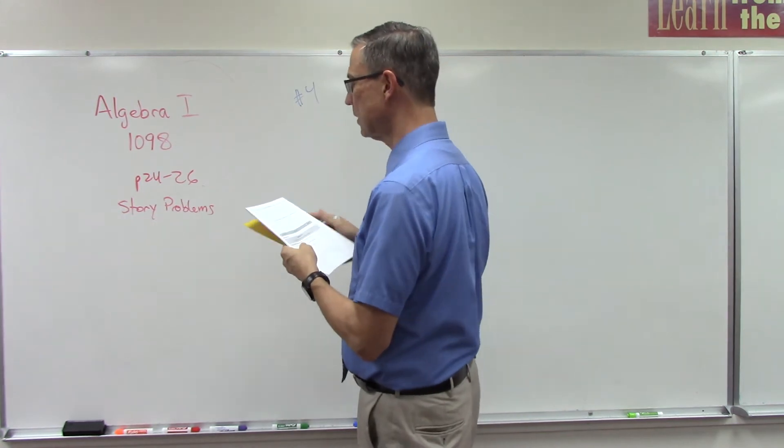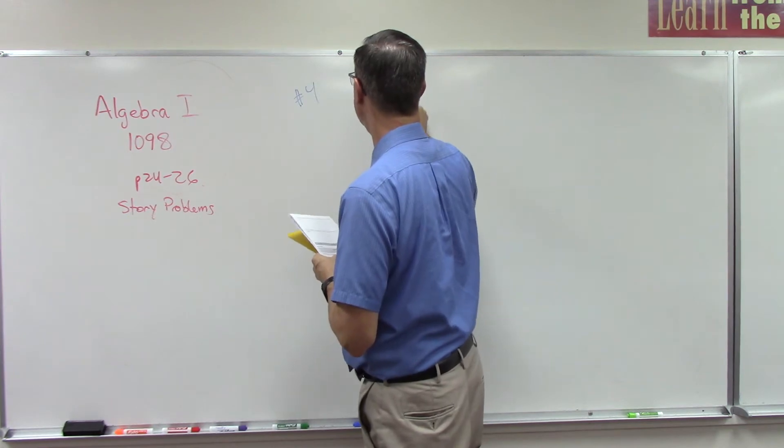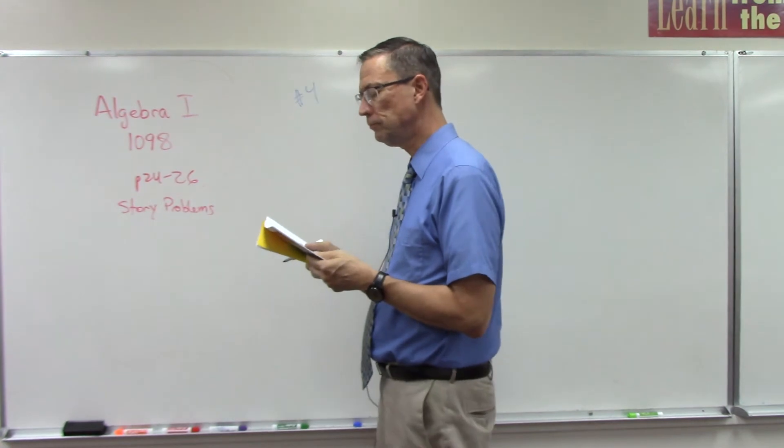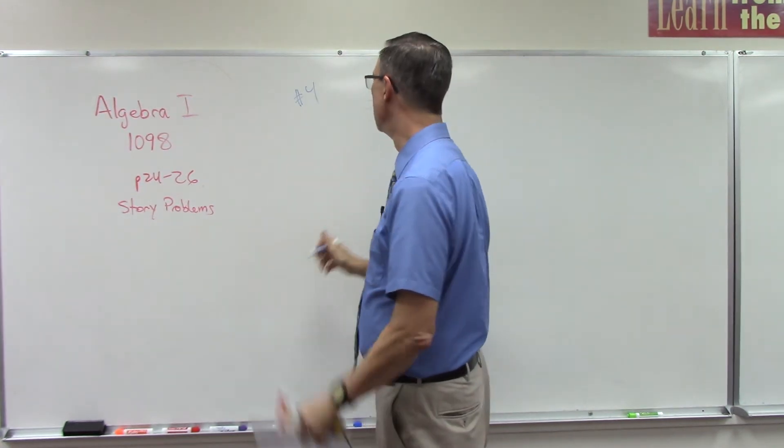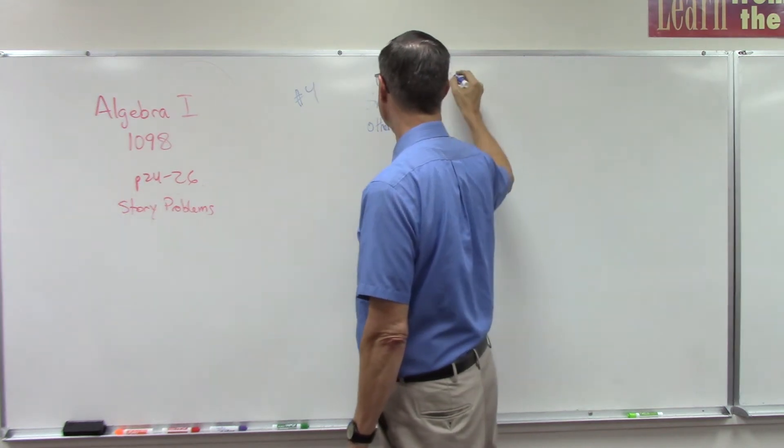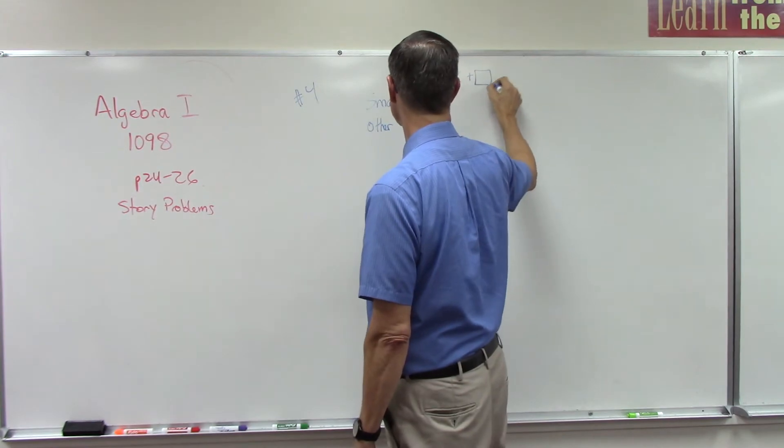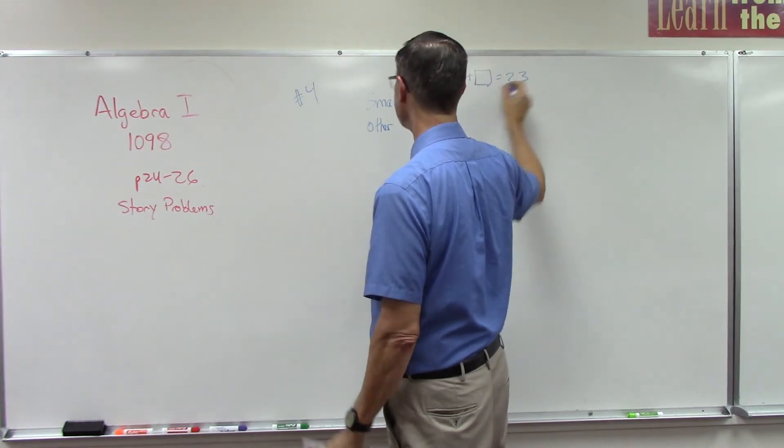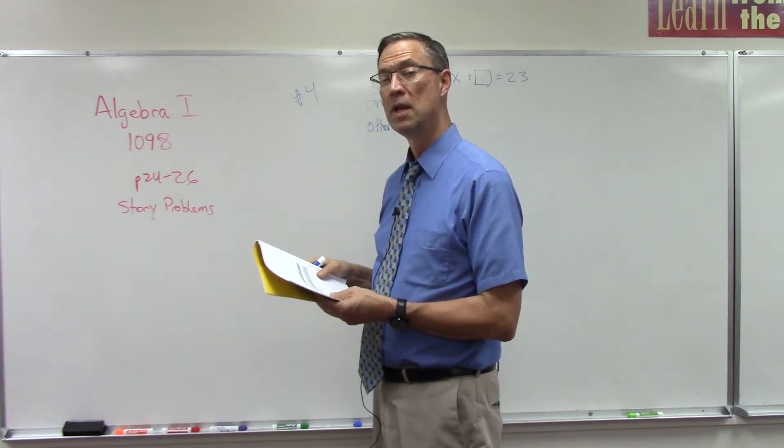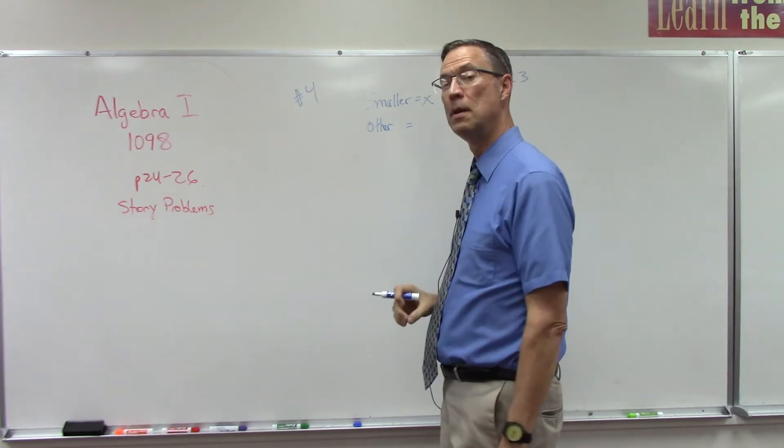Let's let the smaller number be x. What would the other number have to be? We could call it the larger one. We know that x plus the next number have to equal 23 because it says the sum of the two numbers—sum means addition. So since they have to add up to 23, we have to figure out what is that missing number.